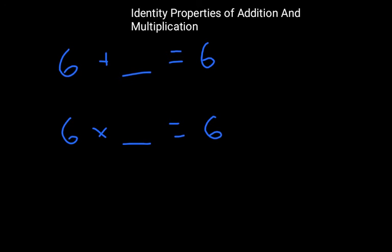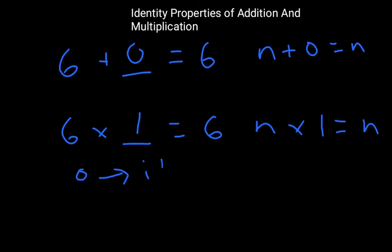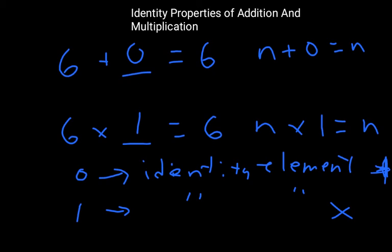Two different numbers, by the way, which you probably know. Of course, this would be a zero, and this would be a one. So the identity property of addition would say that any number plus zero equals that number. And the identity property for multiplication would say any number times one would be that number. And then zero is the identity element. It's called the identity element for addition. And one is the identity element for multiplication.